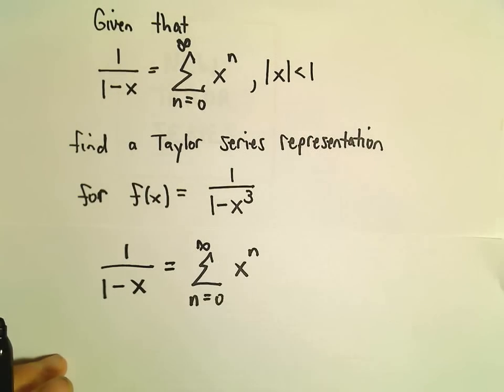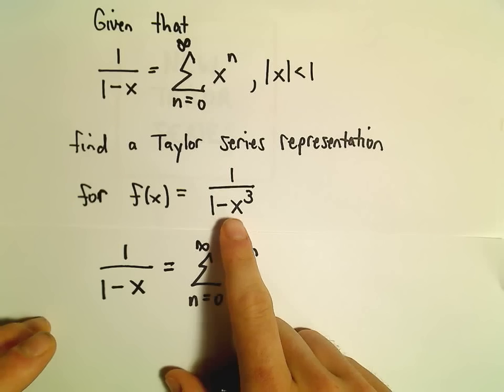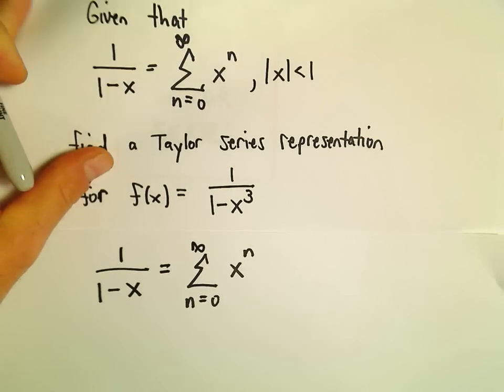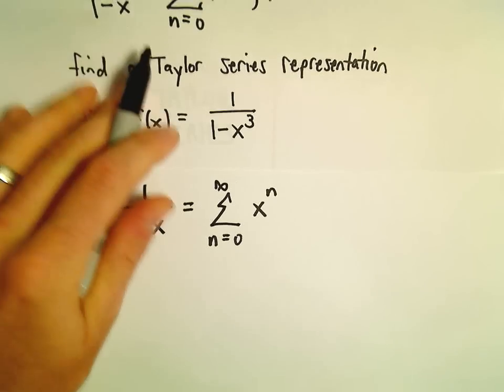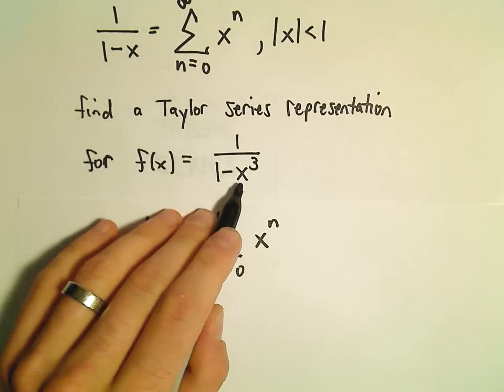This is only valid when |x| < 1. But to figure out the new series representation, it's very simple. Notice that in our target function, we've just replaced x with x³.